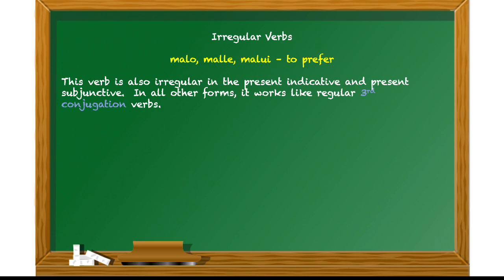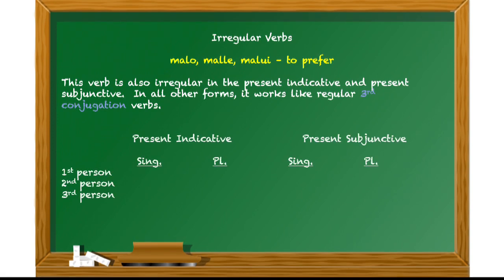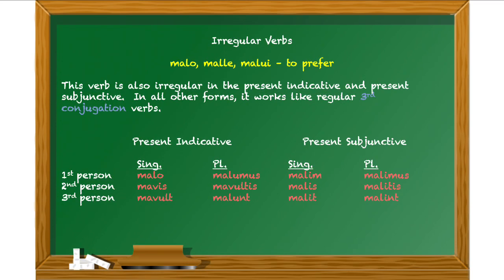Once again, it is irregular in the present indicative and present subjunctive only. And all of its other forms follow third conjugation patterns. We've got our chart set up here for the indicative and subjunctive sides. And here come the forms. Malo, mavis, mavult. And you can really see the forms of volo in there. Malumus, mavultis, malunt. And then in the present subjunctive, malim, malis, malit, malimus, malitis, malint.